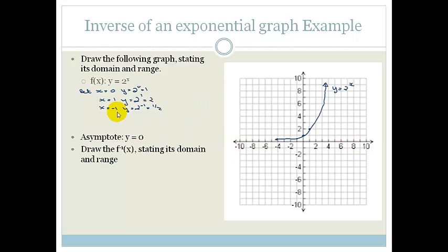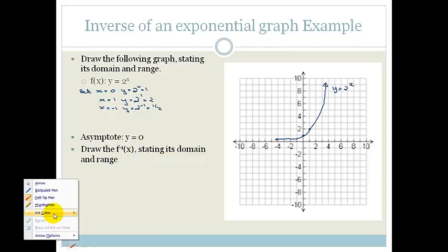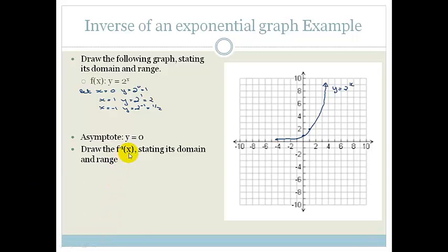Now let's draw the f inverse stating its domain and range. To get the f inverse, what do we do? We swap x and y and solve for y. We've got x equals 2 to the y and now we need to solve for it. We go y is log x base 2. We can see that the log is the inverse of our exponential graph.